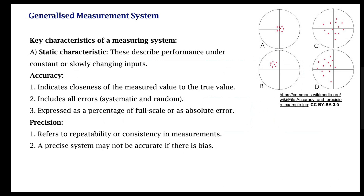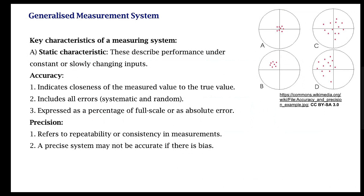As accuracy increases, the percentage of the full scale value reduces, but this leads to an increase in cost and complexity of the system. A related but different concept is precision, which refers to repeatability — how consistent your measurements are. You can have systems that are repeatable but not accurate: predictably wrong values with high consistency. That is a system that is precise but not accurate.